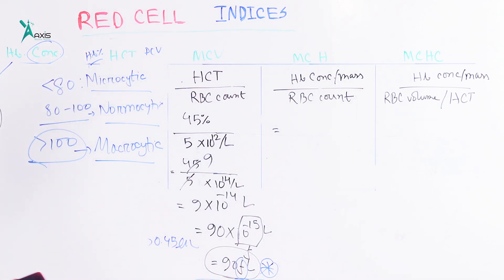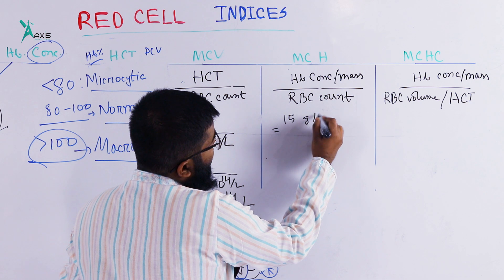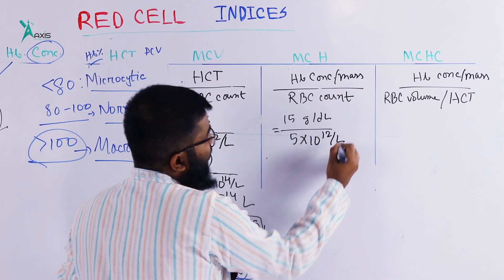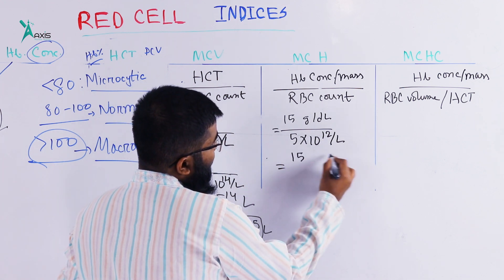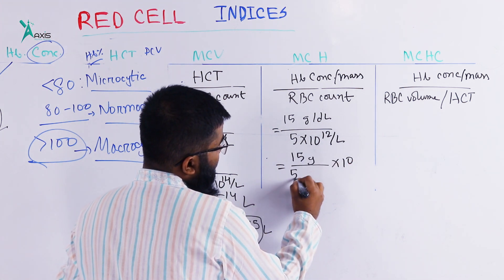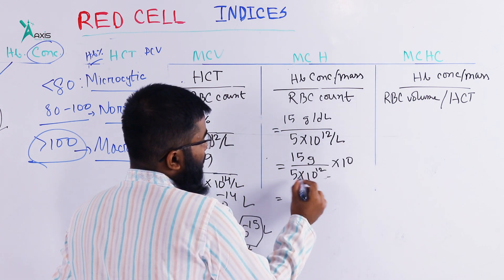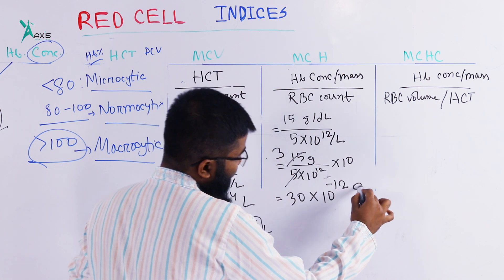Taking hemoglobin at 15 grams per deciliter, the MCH (Mean Corpuscular Hemoglobin) is calculated by dividing hemoglobin of 15 g/dL by the RBC count of 5 × 10¹² per liter, giving approximately 3 × 10⁻¹² grams.